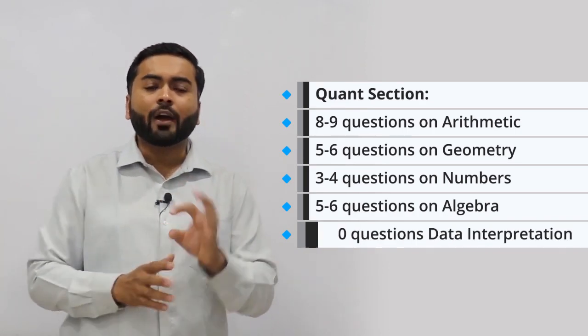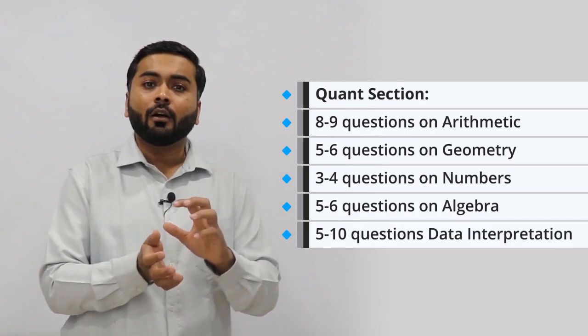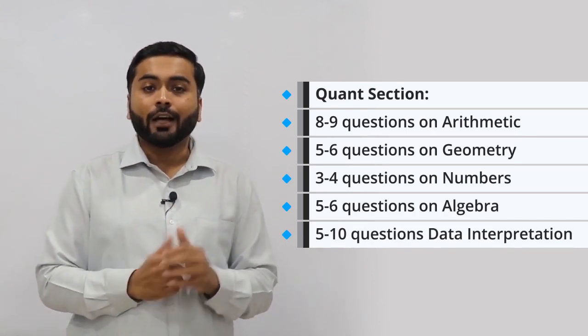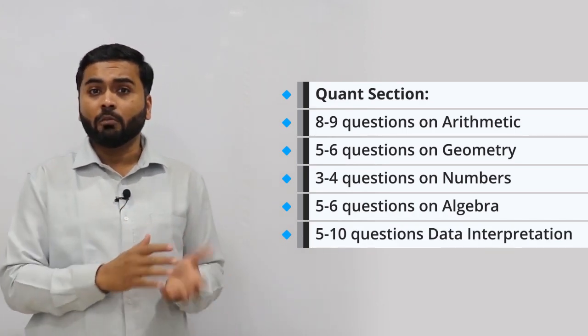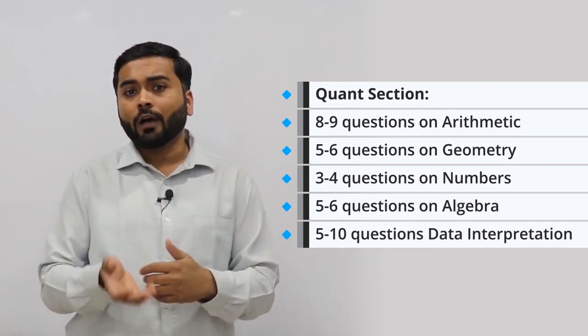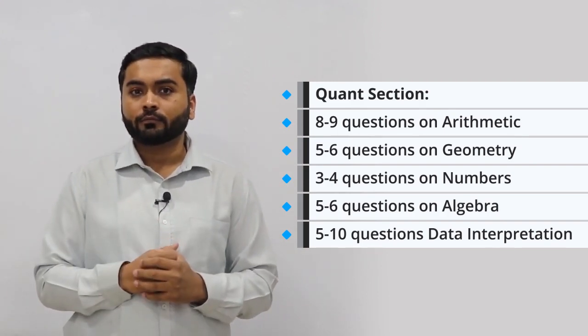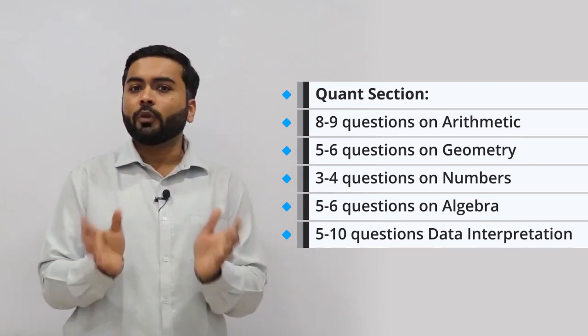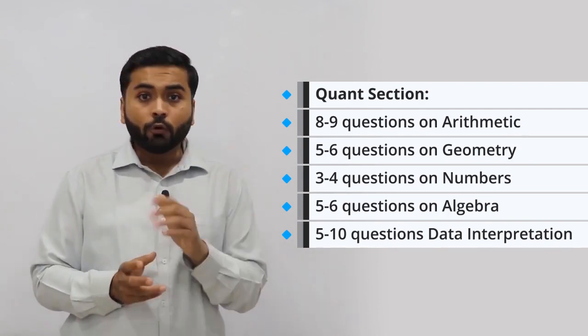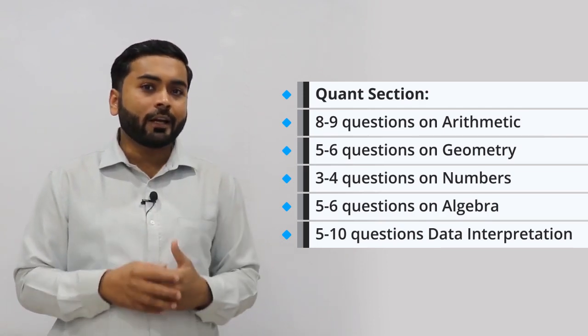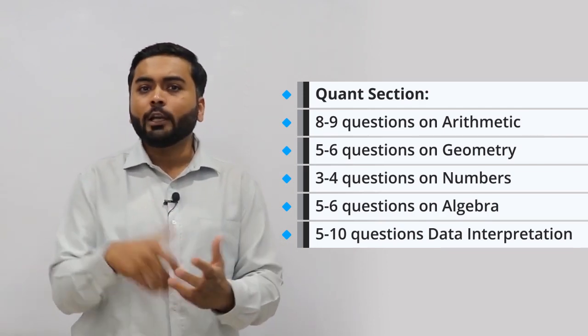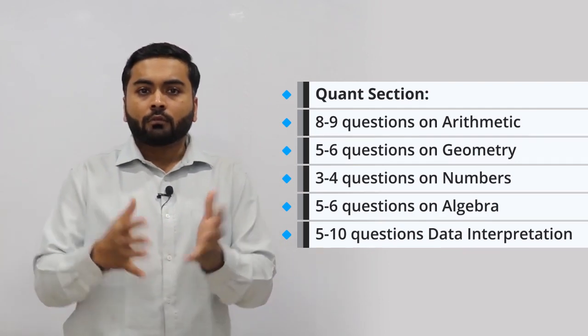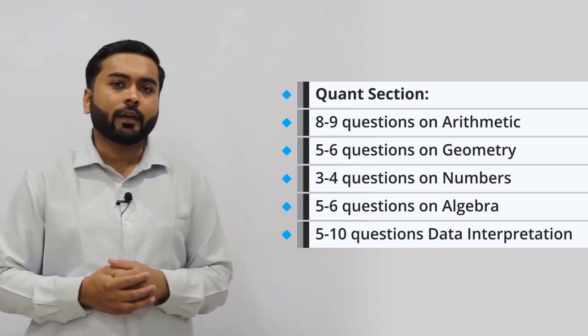You'll also have around 5 to 10 questions of data interpretation. Last year SNAP didn't have data sufficiency, but in earlier years they used to ask data sufficiency questions as well. So attempting 20 questions in SNAP quant section should not be a difficult task. If you are good at maths, probably one can attempt around 28 to 30 odd questions and can move ahead to the next section.